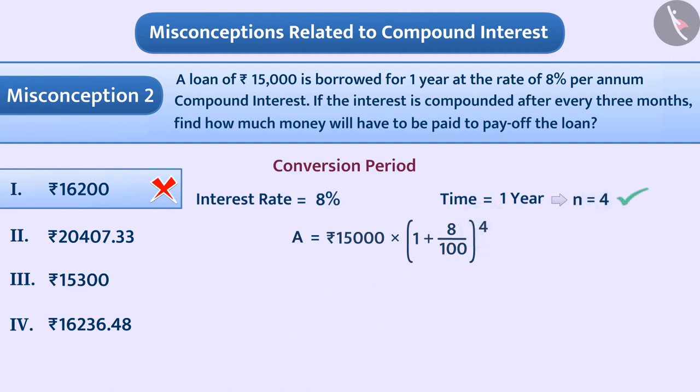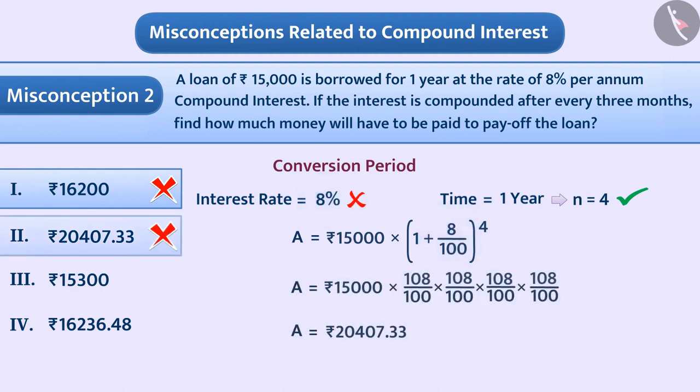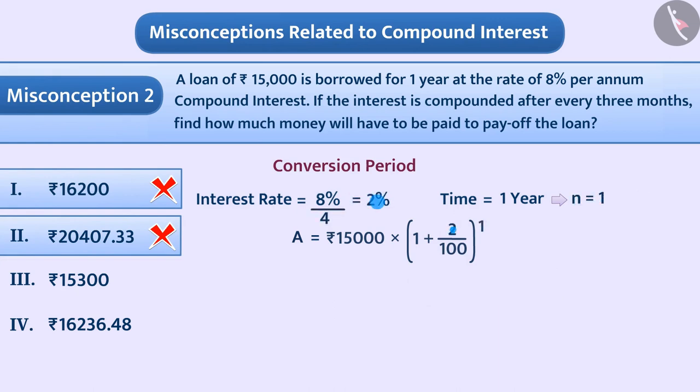Some children change the conversion period but forget to change the rate of interest. Similarly, some children change the rate of interest but forget to change the conversion period.